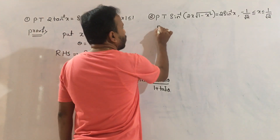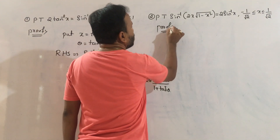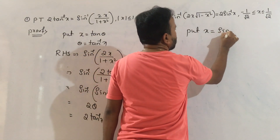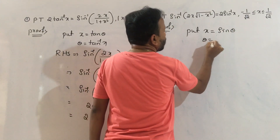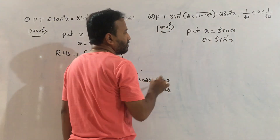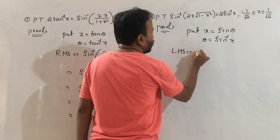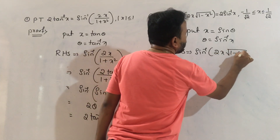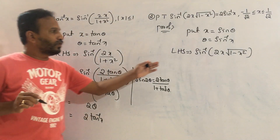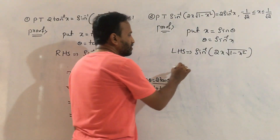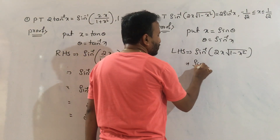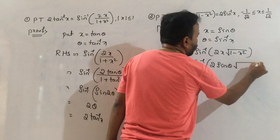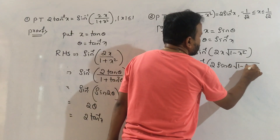Proof. Put x equal to sin theta, so theta equal to sin inverse x. LHS equal to sin inverse of 2x into root of 1 minus x squared. Substituting x equals sin theta, we get sin inverse of 2 sin theta into root of 1 minus sin squared theta.